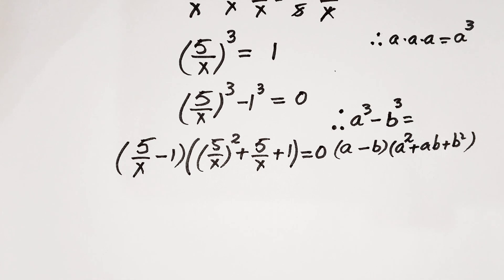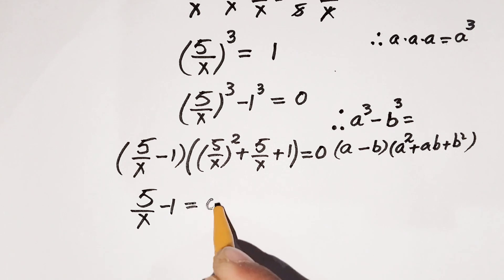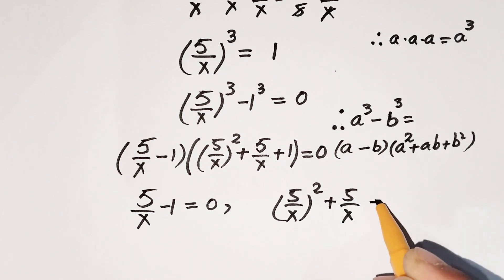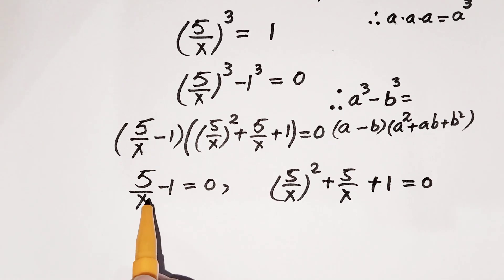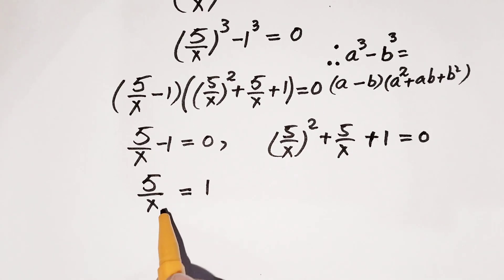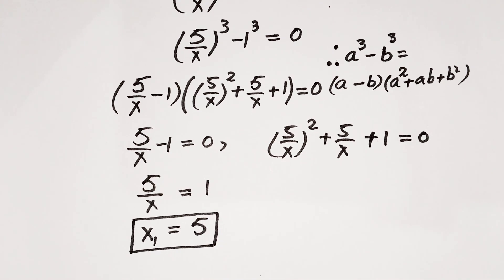We have two conditions. The first is 5/x minus 1 equals 0, and the second is (5/x)² plus 5/x plus 1 equals 0. From the first condition, shifting minus 1, we get 5/x equals 1, so cross-multiplying gives x equals 5. This is our first real solution.